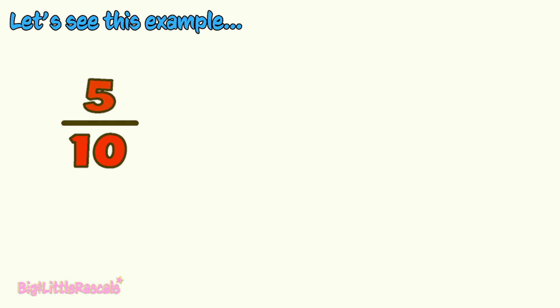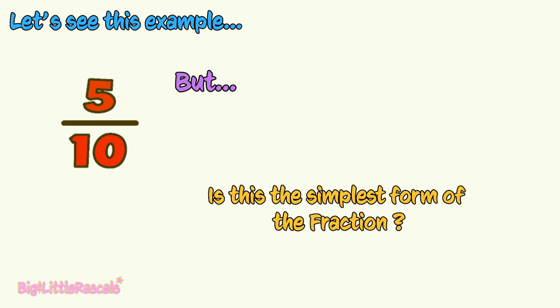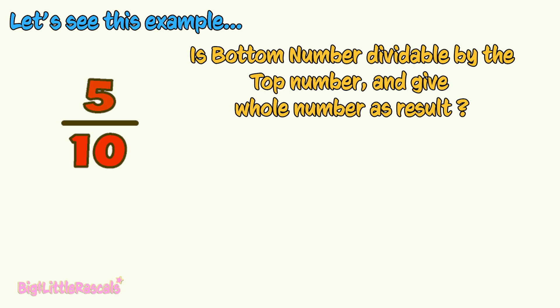Let me begin with an example here. Five-tenths. This is a fraction, but is this a simplest form of fraction for five-tenths? To check if a fraction can still be simplified further, first, we need to check if the bottom number, which is called denominator, is dividable by the top number, which is the numerator, and still giving you result as whole number.